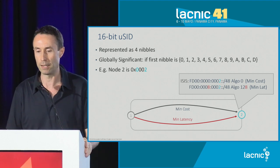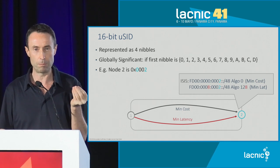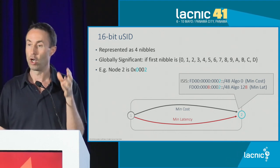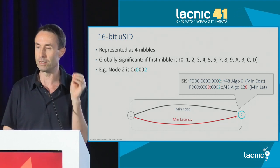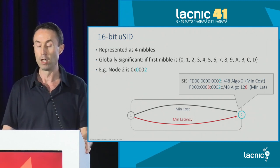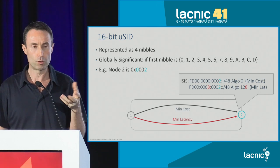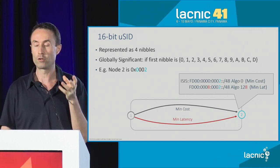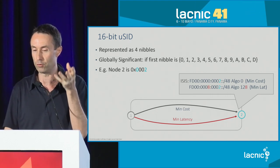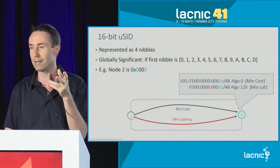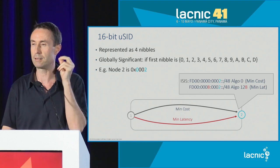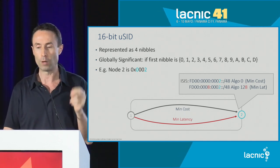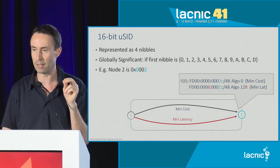The next step is to allocate microsegments. Microsegments are 16 bits, or four hexadecimal nibbles. There are global microsegments and local microsegments. Global microsegments start with the first nibble between zero and D. To make it easy: for node number two, you allocate a global ID with the first nibble set to zero, the other nibbles to zero, and the last nibble to two — so you can memorize this is the global ID for node number two. Once you have allocated a global ID to a node, you append this to each of the 32-bit blocks and advertise them in ISIS. Node two advertises in ISIS: within the best effort block, this is a slash-48; within the low latency block, also a slash-48.